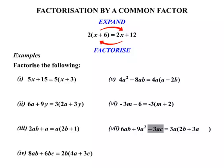And the final term is the minus 3ac, and that's made up of 3a times negative c. Excellent. Well, that concludes our lesson on factorization by a common factor.